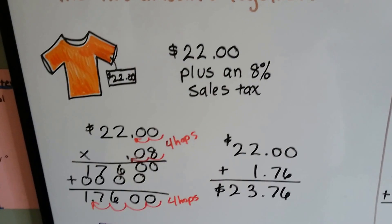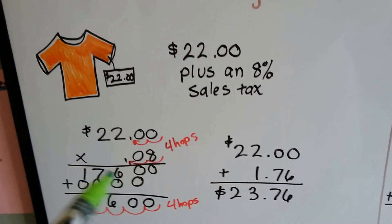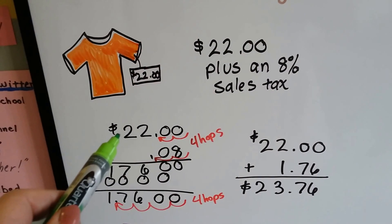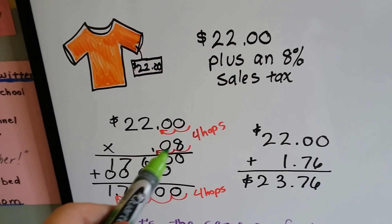So if we have a $22 shirt and it's got an 8% sales tax, 8% is .08. We multiply the $22 times .08.